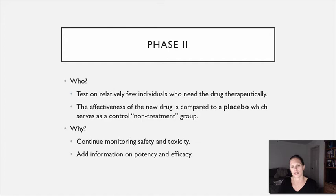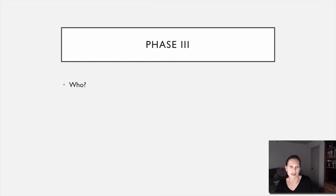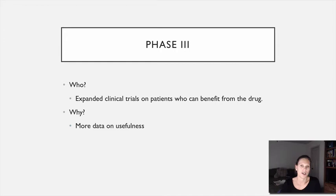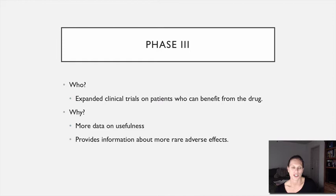Phase 3 is the biggest — an expanded clinical trial on patients who can actually benefit from the drug. There are more people enrolled and it runs for a much longer period of time. With more people taking the drug for longer, you get a lot more data on the drug's usefulness, and you start to potentially see some adverse effects or side effects, including rarer side effects that only emerge over time and with larger populations.